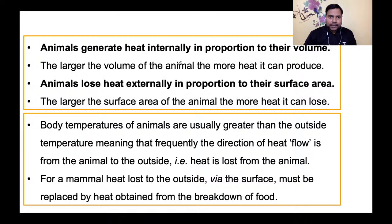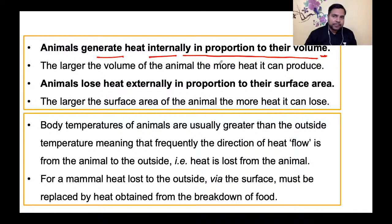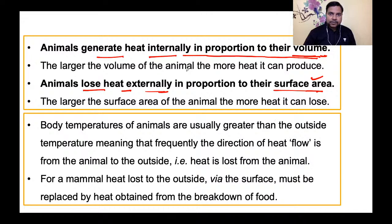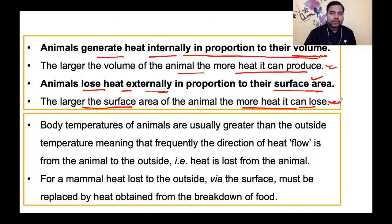Animals generate heat internally in proportion to their volume, लेकिन animals lose heat externally in proportion to their surface area। इसका मतलब है: larger the volume of the animal, the more heat it can produce। Similarly, surface area ज़्यादा होगा तो heat का dissipation या heat का flow environment में ज़्यादा होगा।